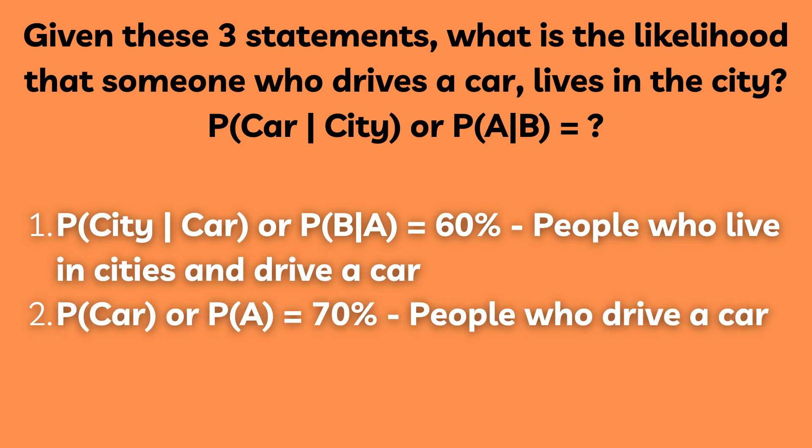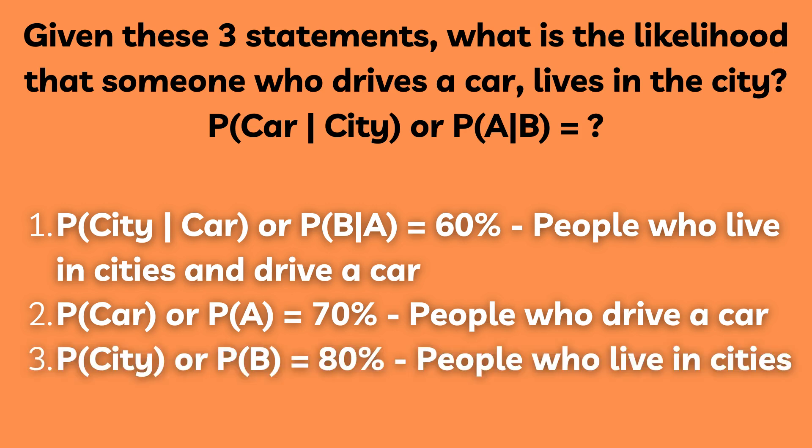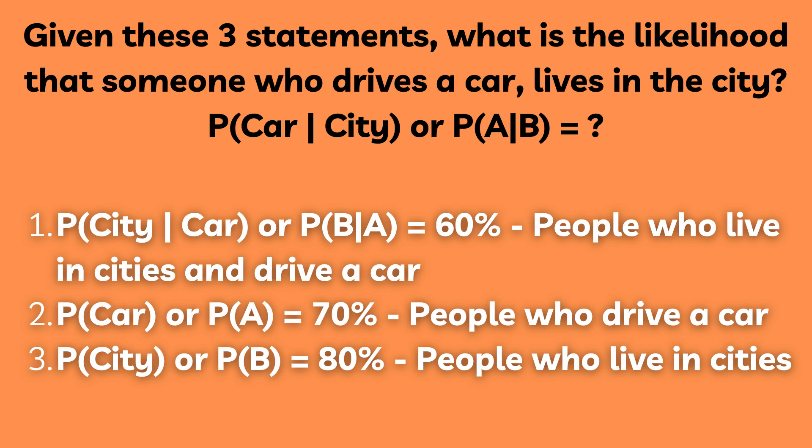In addition, 70 percent of people drive cars — let's call this probability of car, or P(A). And finally, 80 percent of people live in cities — let's call this probability of city, or P(B).